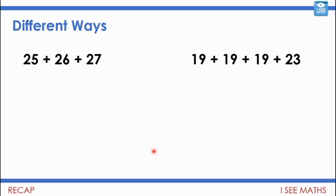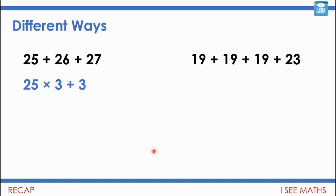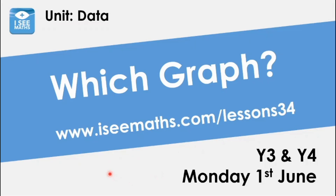Let's move on to the next examples. Are there different ways you can do these calculations? Pause the video and have a look. For 25 plus 26 plus 27, I'd do 3 lots of 25 and then add 3 — 1 for the 26 being 1 more than 25, and 2 more for the 27. For 19 plus 19 plus 19 plus 23, I'd do 4 lots of 20, then distribute the extra 3 from the 23 — one each to the three 19s — to make my four 20s. I hope these videos have been inspiring for you to see different ways to calculate. Now we're moving on to graphs: different kinds, when they're used, and why we have different types.